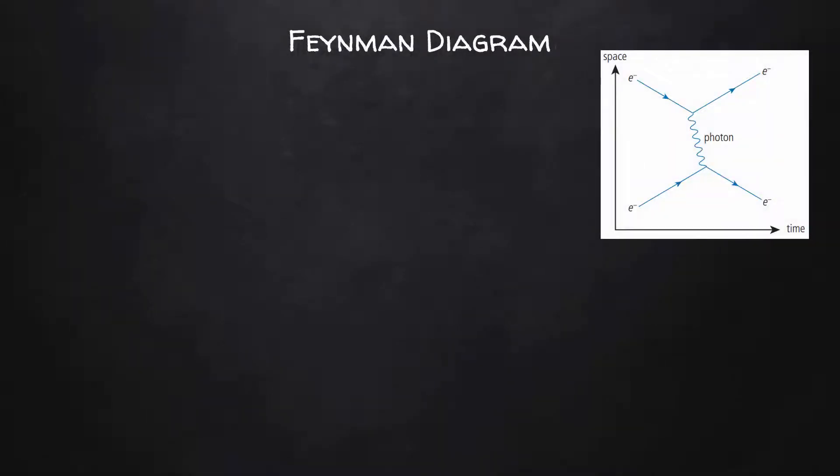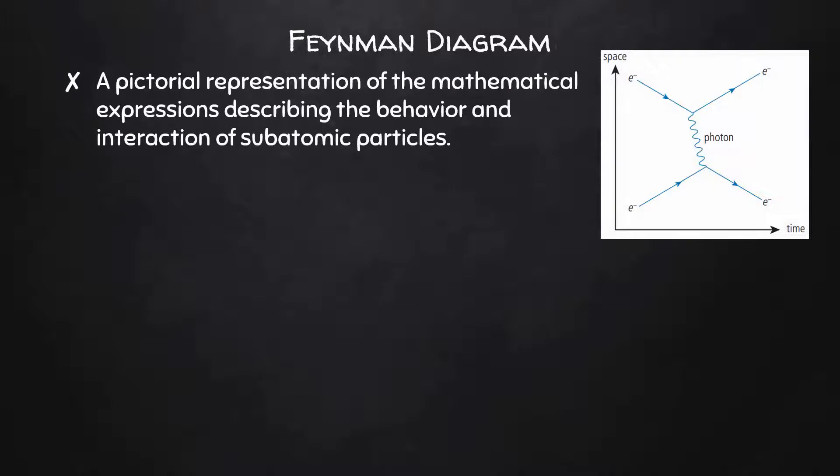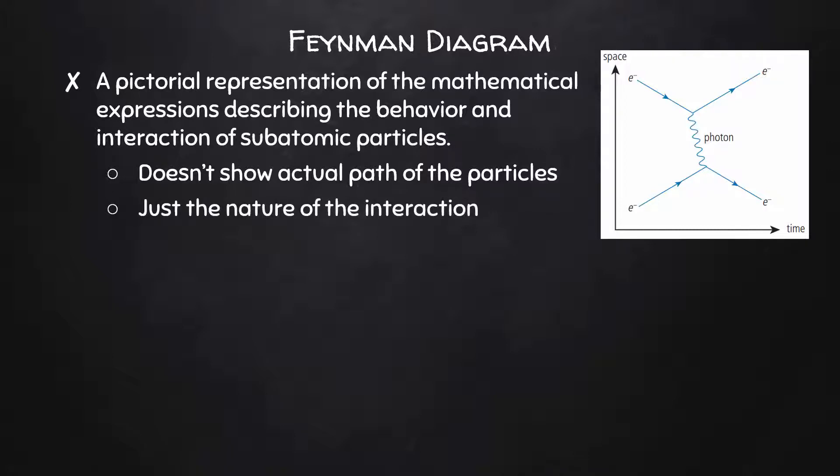Let's take a look at a Feynman diagram. First of all, what a Feynman diagram actually is is kind of convoluted. It's described as a pictorial representation of the mathematical expressions describing the behavior and interaction of subatomic particles. That's a mouthful. This is to say that the diagrams don't show the actual path of the particles. It's a representation of the nature of the interaction.